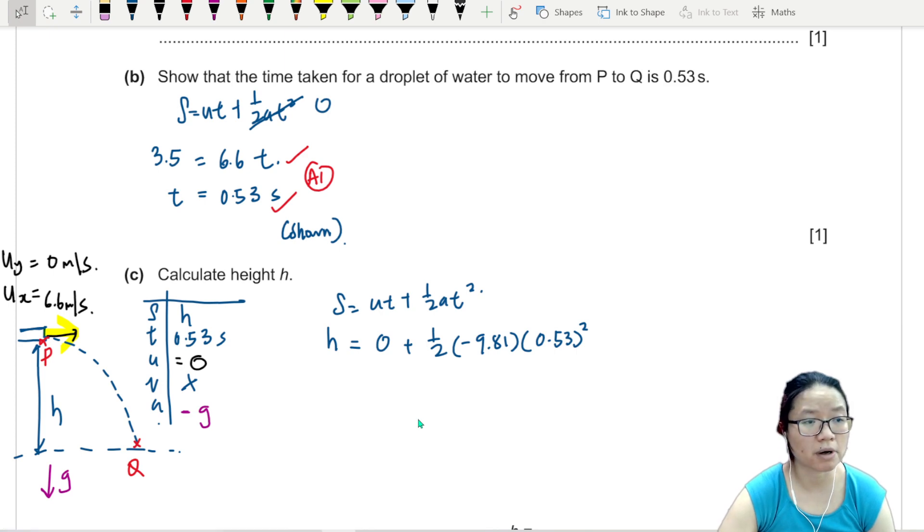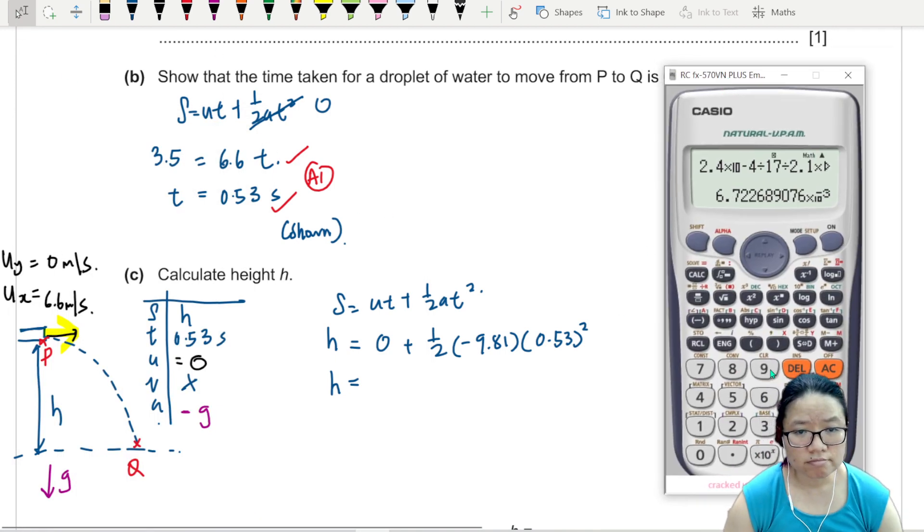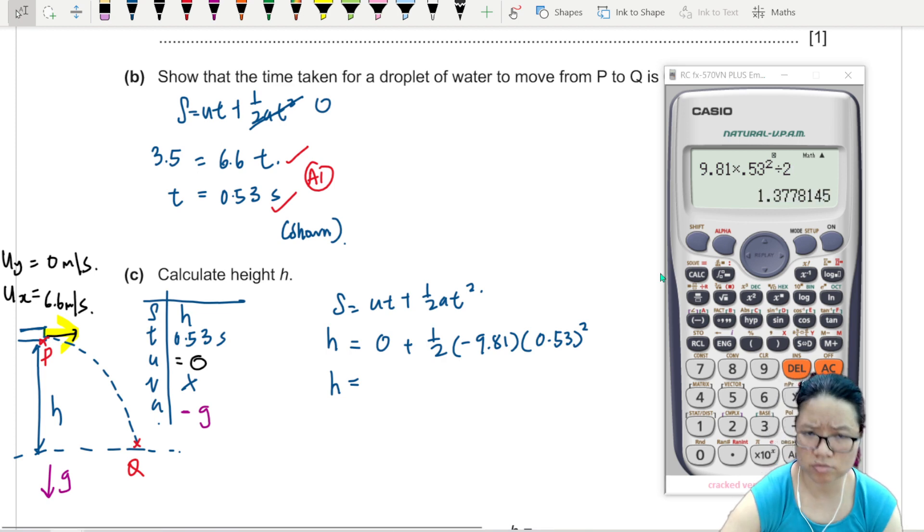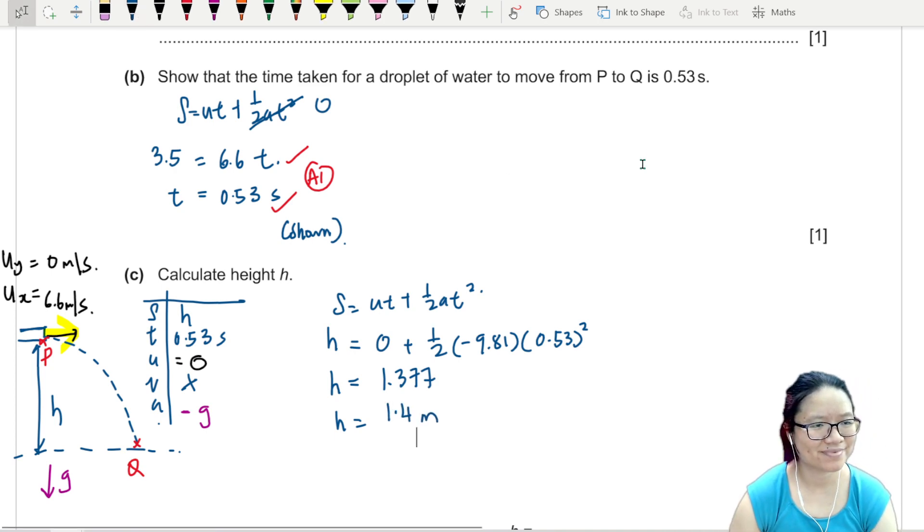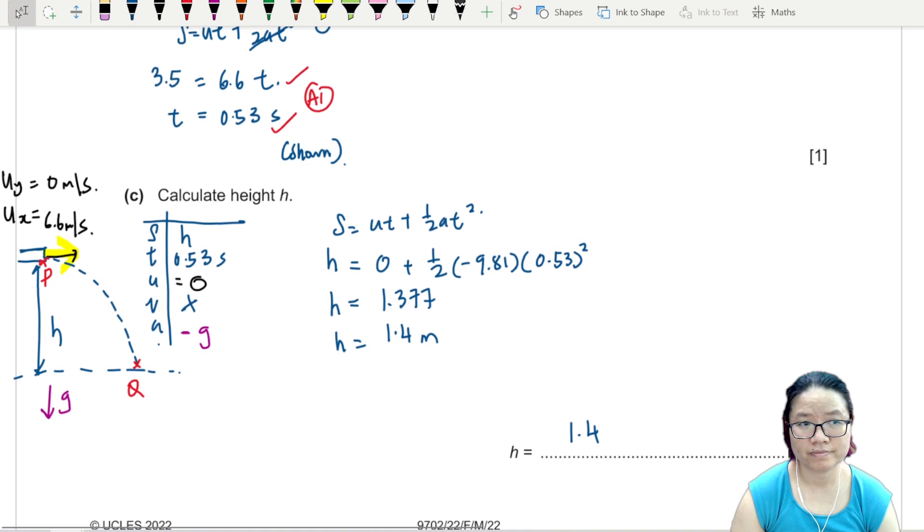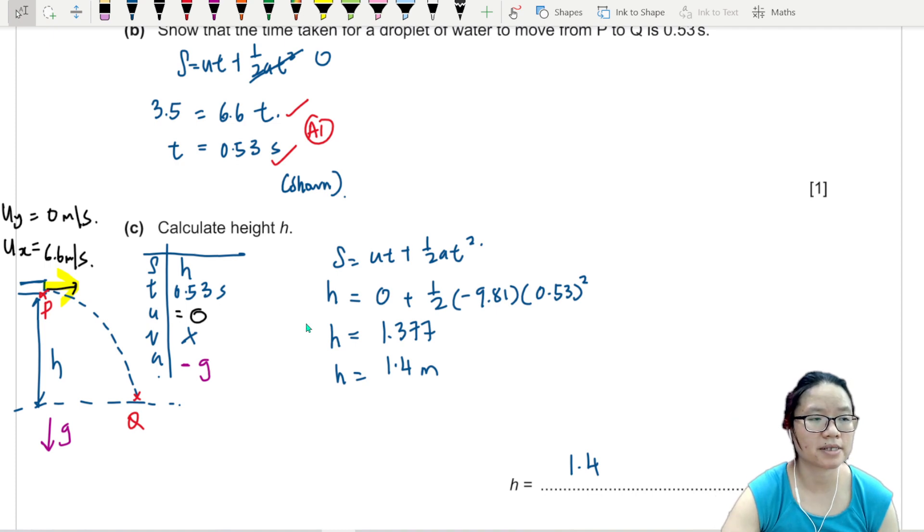I normally stick to the amount of significant figures they give me. So from here, I'll have my h. Let me pull up my calculator. 9.81 times 0.53 squared divided by 2. So my answer is 1.37 which is 1.4. Why did I keep saying 13? 1.4. So it's not that hard. Again, this is just a basic projectile question.